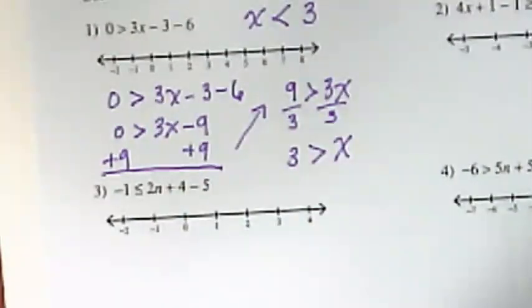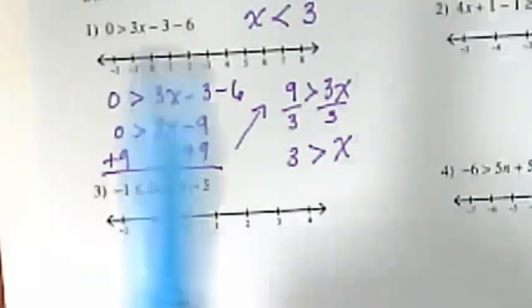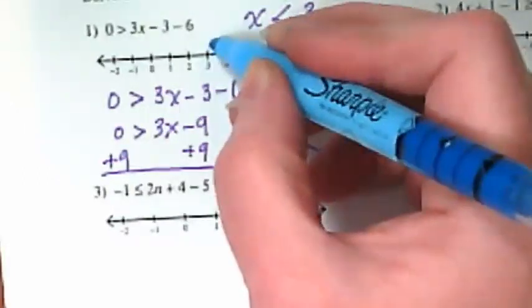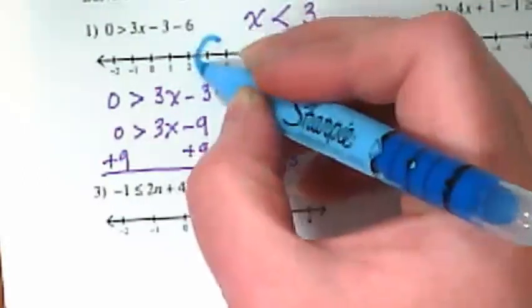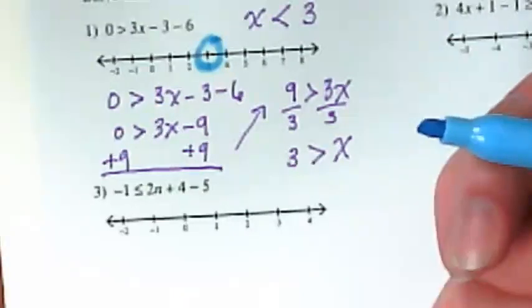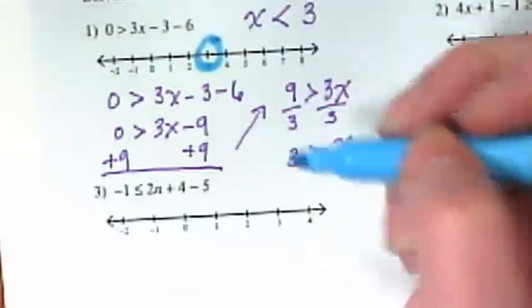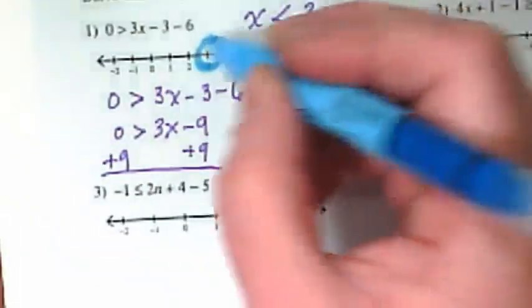This is why I like highlighters for this. If I'm going to use my pen or a pencil, it's hard to make the line dark enough to show. But a highlighter really does show it. I'm going to circle the three. Am I leaving the circle open or closing it? And my arrow is going to go to the left.